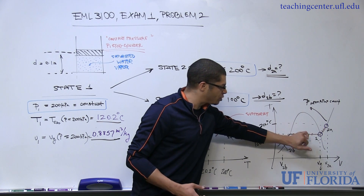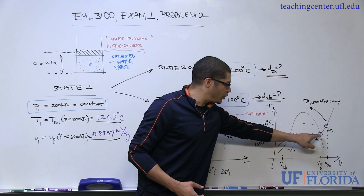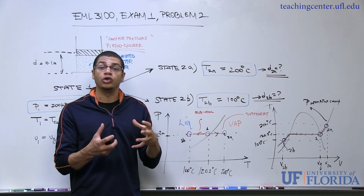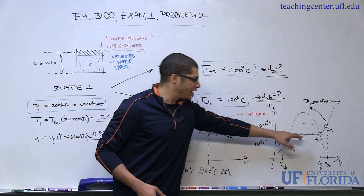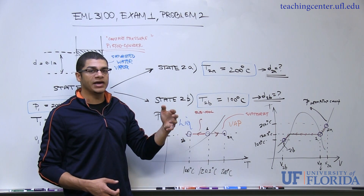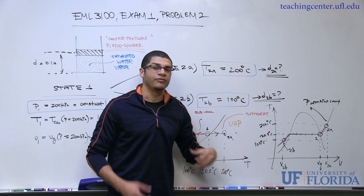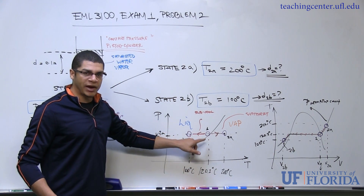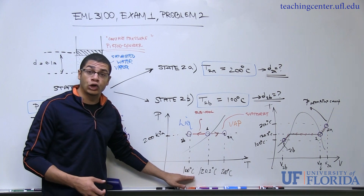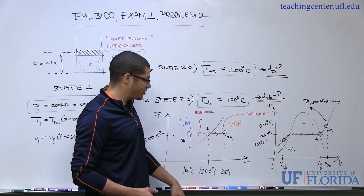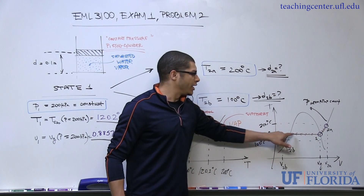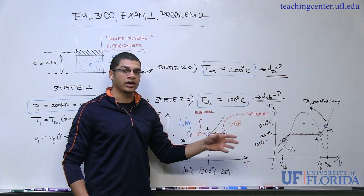Looking at the TV diagram, state one is at 120.2°C along its isotherm at the saturated vapor state — on the very right-hand side of the vapor dome. If we remove energy from the system, we move from one to two B, and the volume decreases, but the temperature does not change until we've fully condensed back to a saturated liquid state. Following the isobar at 200 kPa, we must remove all of that latent heat, and only then does the temperature start to drop. State two B is a simple constant pressure phase change ending below saturation temperature.